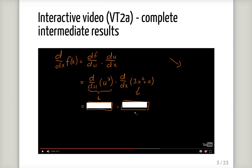The first type of interactive video, we ask the students to complete some intermediate calculations. In this example, the student should use the chain rule to differentiate a certain function. And at this moment, the video then pauses, and the student can fill in the answer, or what they think is the correct answer in these two boxes. And after that, they can click a button and see whether the answer was right or wrong.